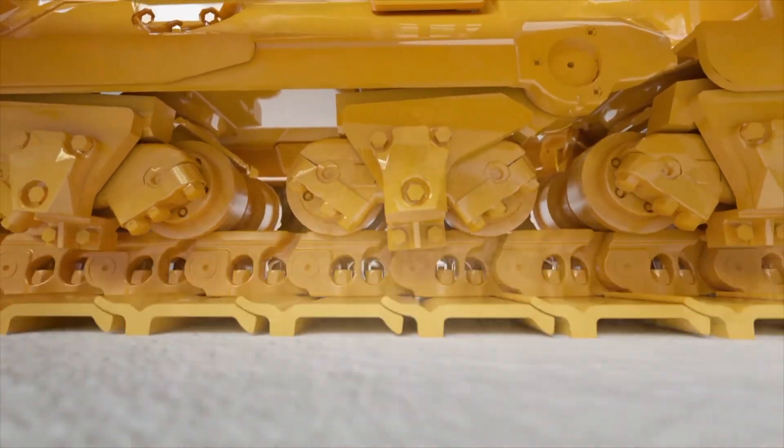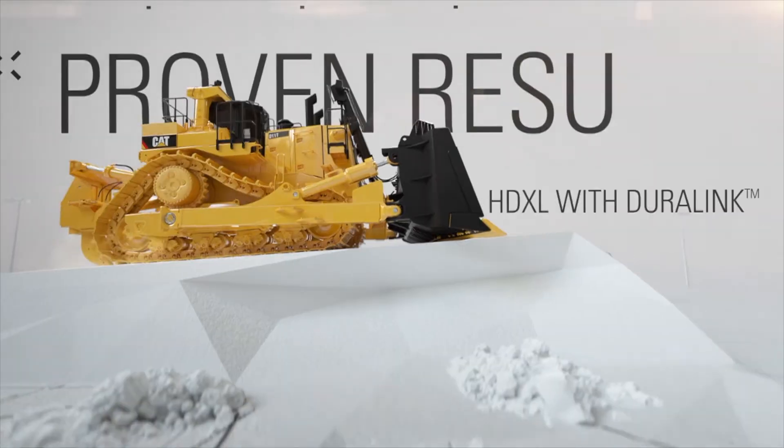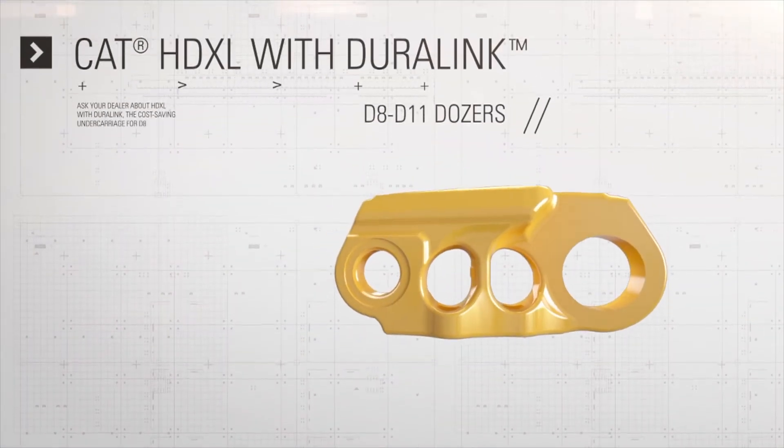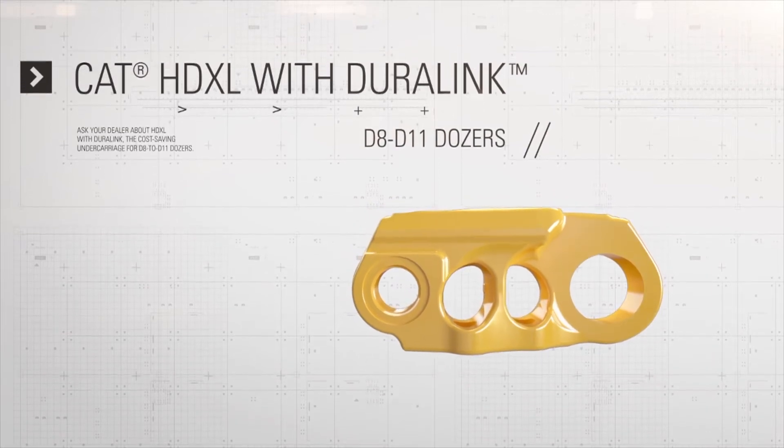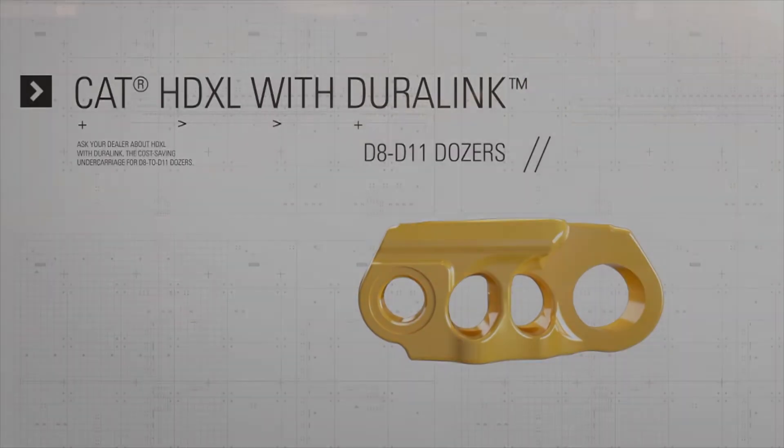It's a simple decision. You can throw away good undercarriage prematurely, or trust a product with a different quality, a patented design, and proven results. Ask your dealer about HD XL with DuraLink, the cost-saving undercarriage for D8 to D11 dozers.